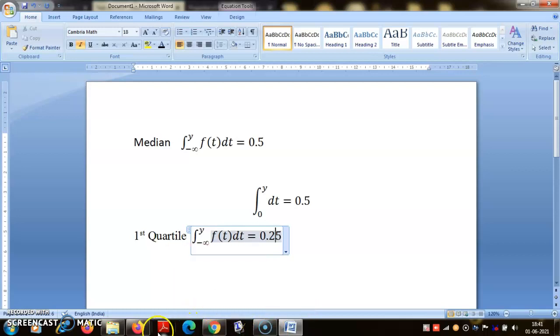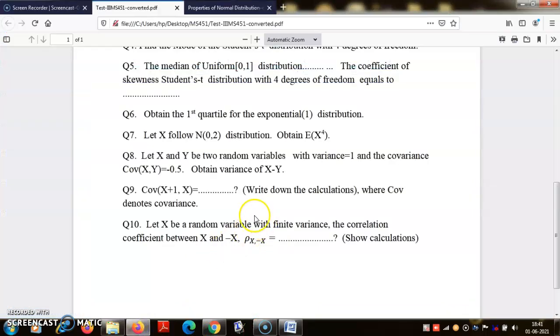If mu is zero, then expectation of X to the power four - I told you expectation of X to the power twice k is one times three times twice k minus one, times sigma raised to the power twice k. So by that logic it should be one into three into sigma raised to the power four.